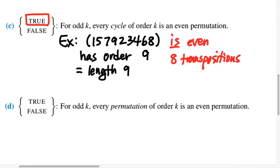So what changes when we go from part C to part D? If I think about permutations instead of just cycles, what's the difference? Maybe what's an example of a permutation of odd order that is not a cycle of odd order? Can you give me an example of a permutation that would look like that?